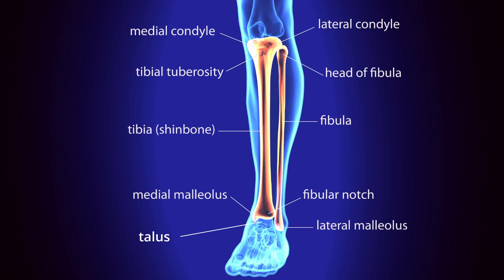Underneath the tibia and fibula, we have another bone called the talus. This bone is important because if the foot goes into dorsiflexion, the talus can actually get wedged in between the tibia and the fibula, which can also stress the anterior inferior tibial fibular ligament.